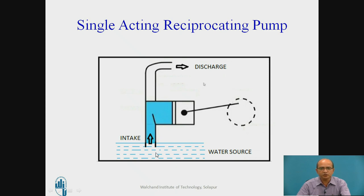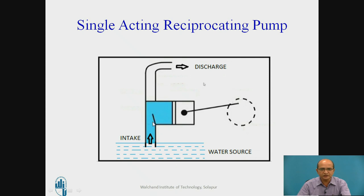In this pump, a foot valve is not required, unlike the centrifugal pump. During suction, water automatically rushes in and is then discharged through the delivery pipe. In the centrifugal pump, if the foot valve is not provided, water returns to the well through the pipeline instead of being retained in the casing. But in the reciprocating pump, when there is no piston movement, the suction valve is closed and water inside remains as it is during the idle condition.